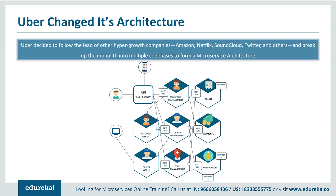This architecture helped Uber scale its services individually. For example, the number of people searching for cabs is comparatively more than those actually booking a cab and making payments. So the number of processes working on the passenger management microservice are more than those working on payments. Also, even if any one feature was down, no other microservice would get affected. Therefore, developers at Uber do not need to rebuild their applications again and again even if one microservice goes down.